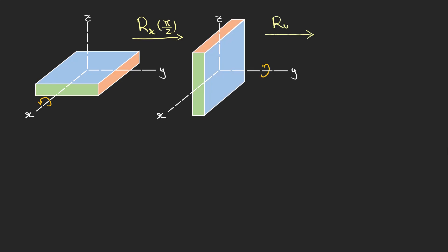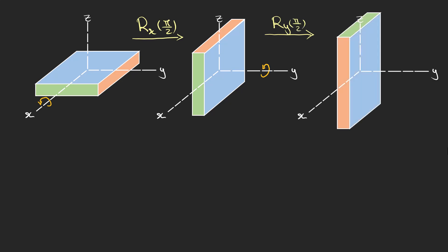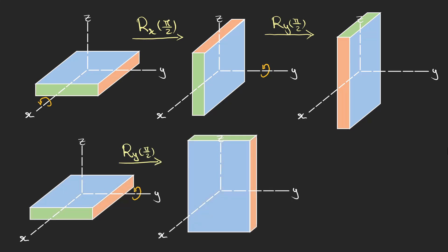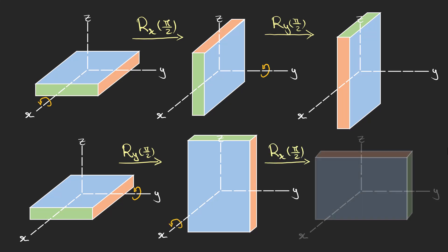A second rotation about the y-axis brings the green side on top aligned with the z-axis. Now let's start over with the same orientation and this time first rotate the box 90 degrees about the y-axis, following by another 90 degree rotation about the x-axis.